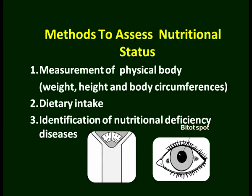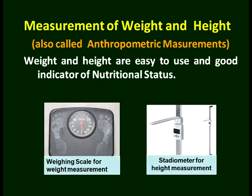In this picture you can see the eye — on the side there is a black spot. These are Bitot's spots and reflect vitamin A deficiency. When we are talking about physical body measurements, we talk about weight and height. The technical word for that is anthropometric measurements. That includes measurement of weight, height, and body circumferences — very easy to use, and a very good indicator of nutritional status.